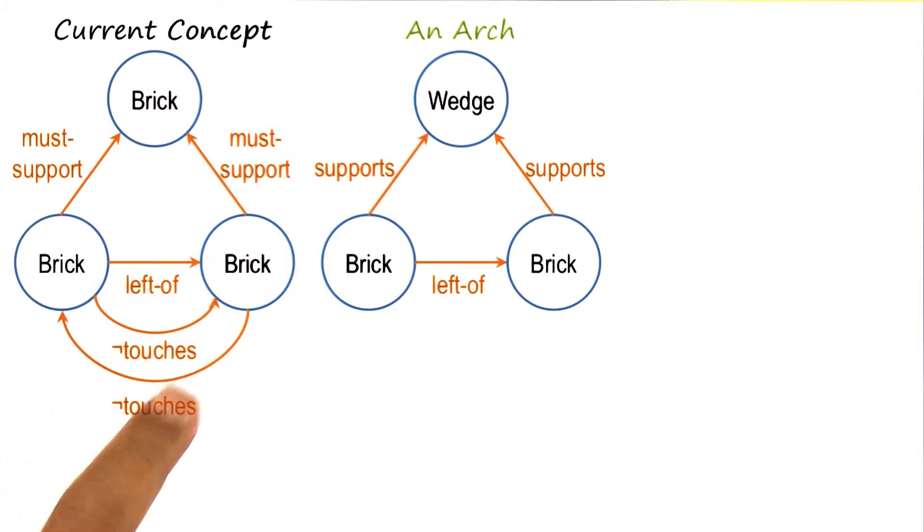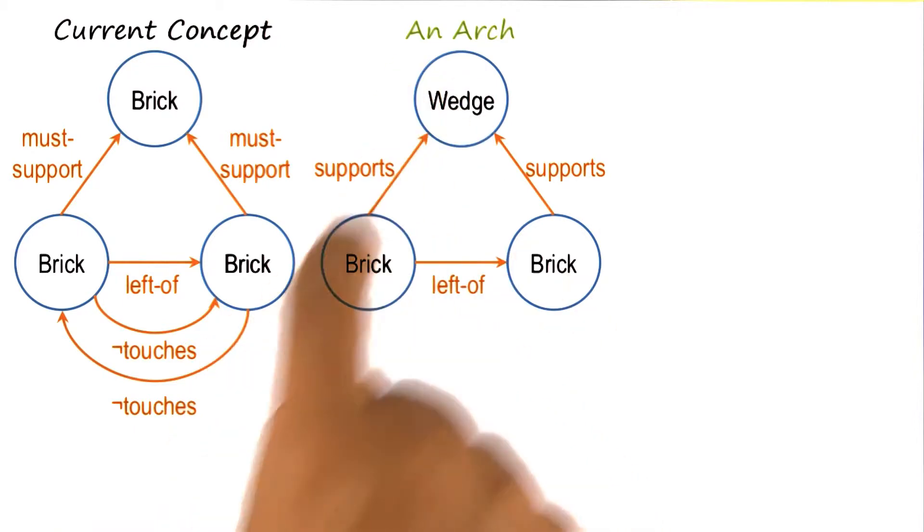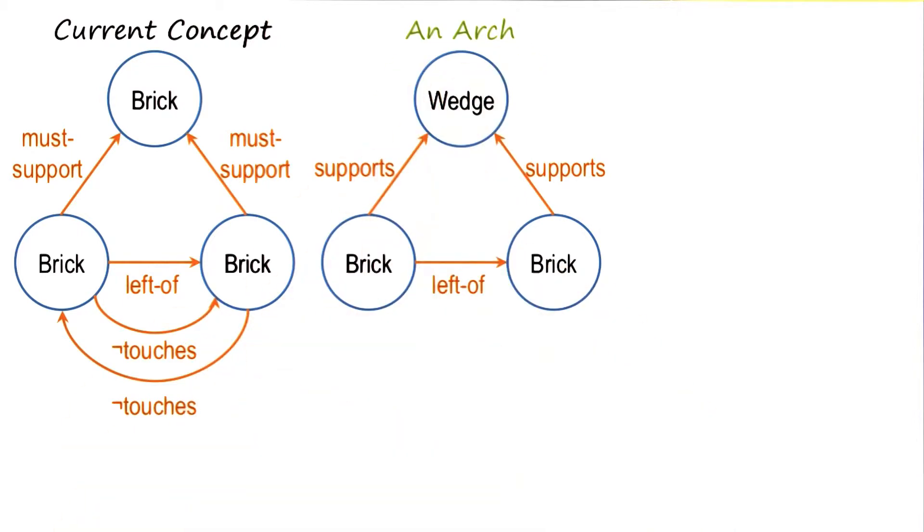Recall the not touches links here, and this is the new example. And this is the positive example. How may the AI program revise its current concept definition to include this positive example?